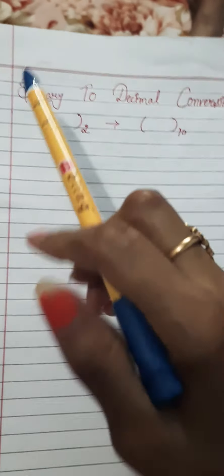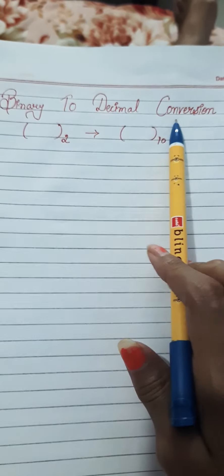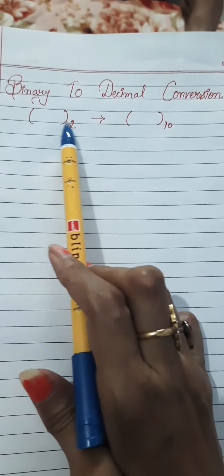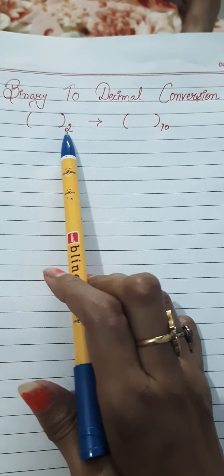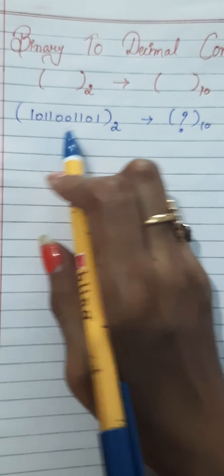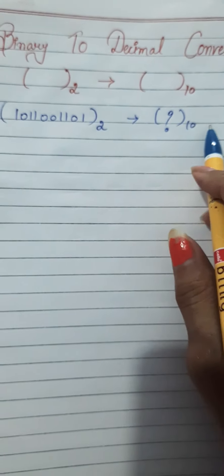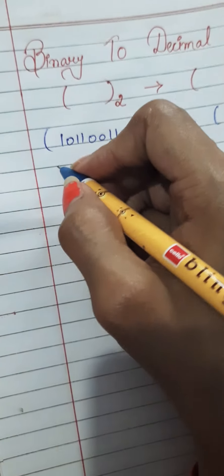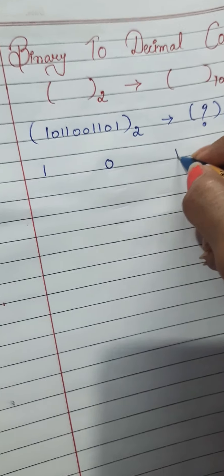Our first conversion is binary to decimal conversion, in which we convert base 2 to base 10. We have taken an example for converting a binary number to a decimal number. To convert it, write all the digits spaced out.